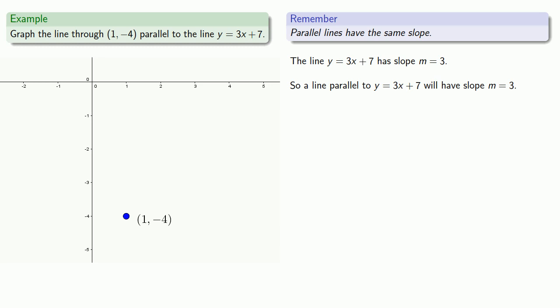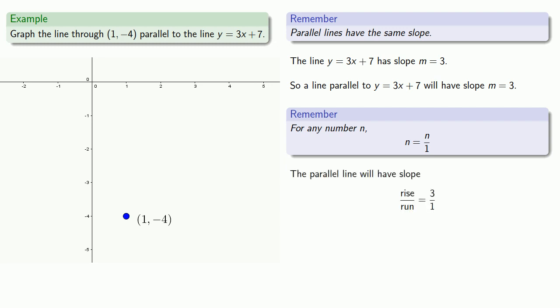And here it's useful to remember that for any number n, n itself is equal to n over 1. And so our parallel line will have slope rise over run equal to 3 over 1.